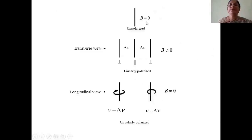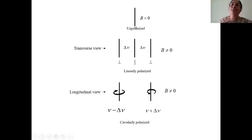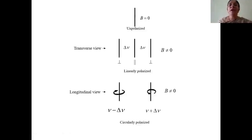When no magnetic field was applied, he observed only a single spectral line in the spectrum. With no magnetic field, B equals zero. He analyzed the spectral line using a Nicol prism or tourmaline crystal to check for polarization. He found that in the absence of magnetic field, the spectral line was unpolarized, meaning vibrations were present in all directions.